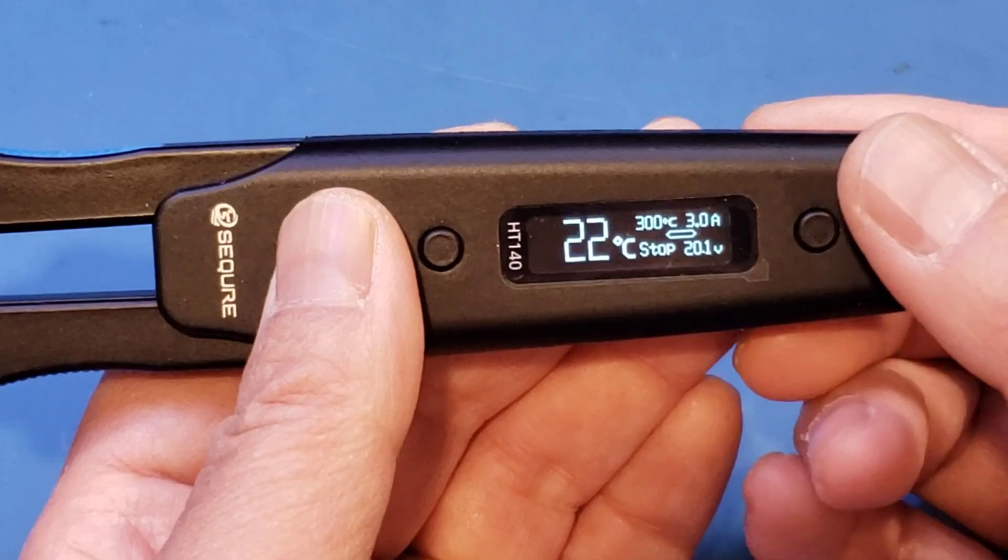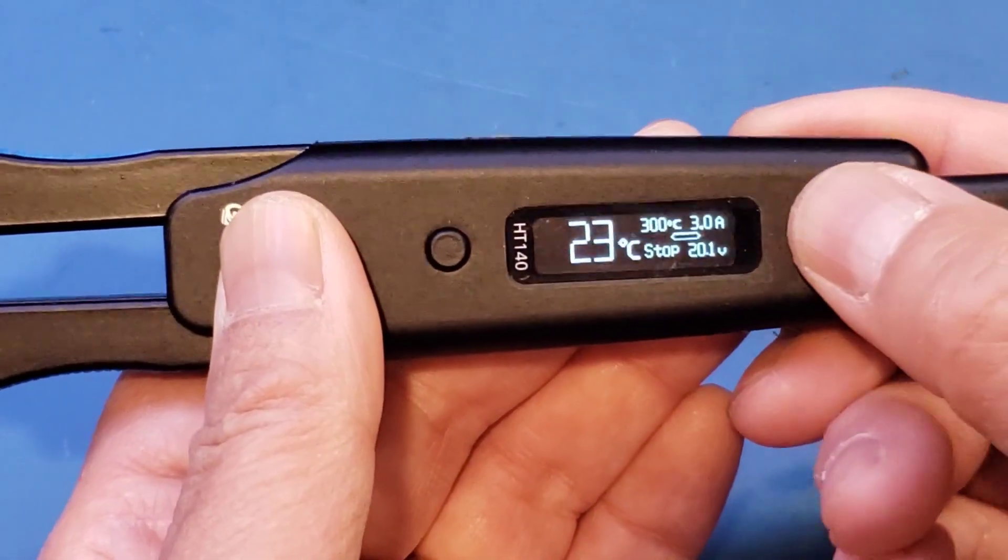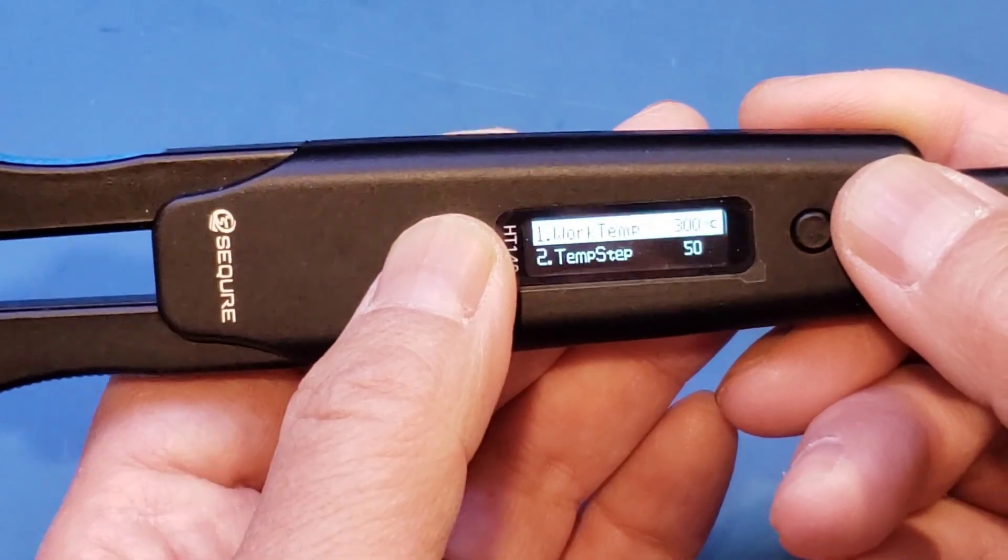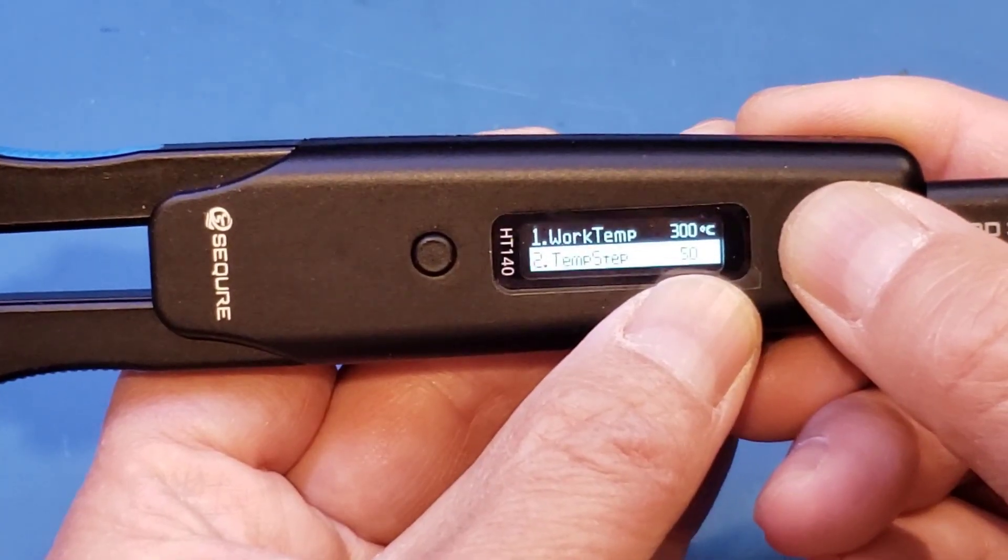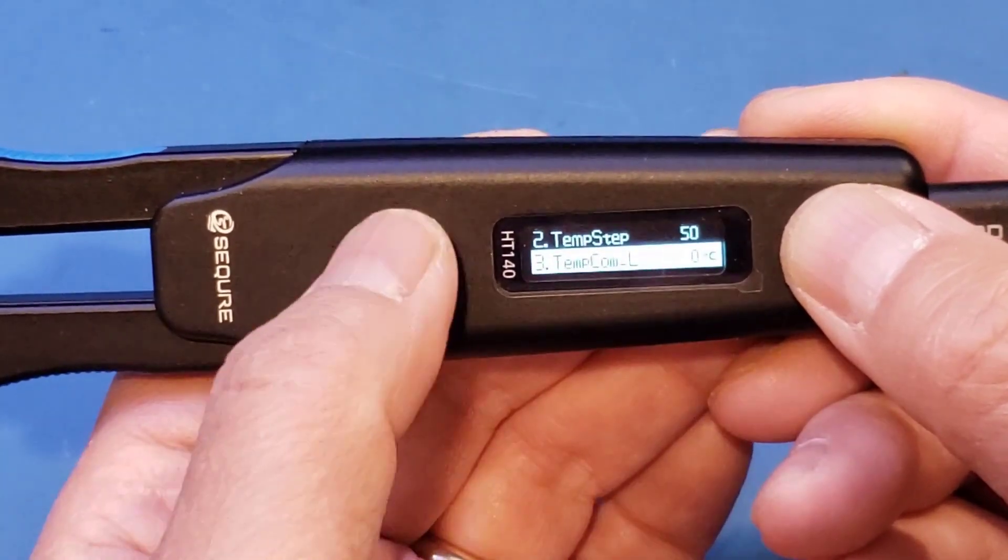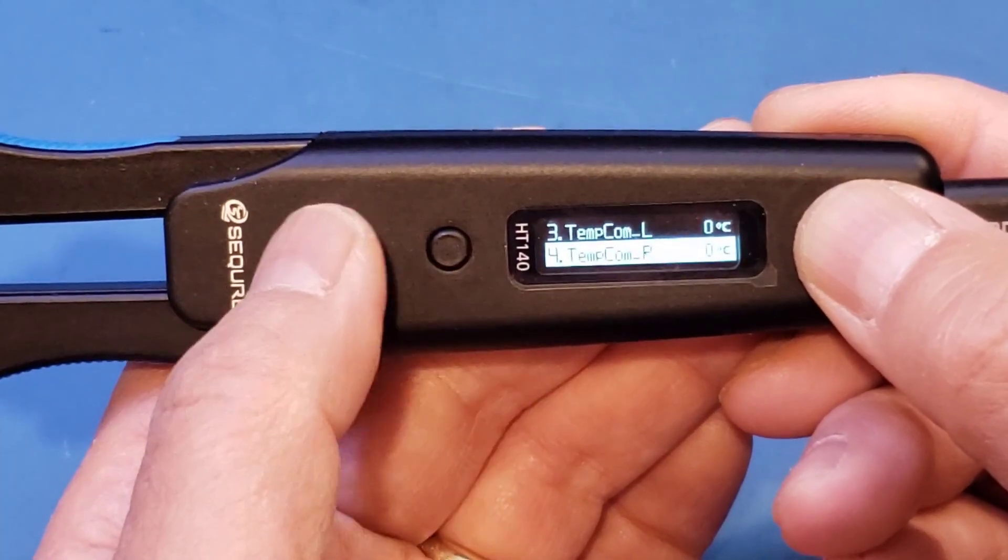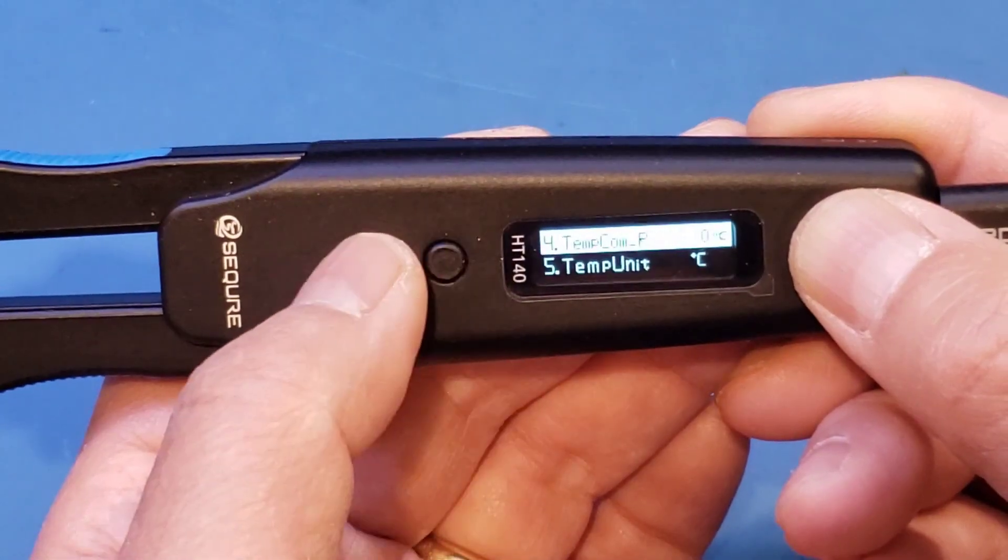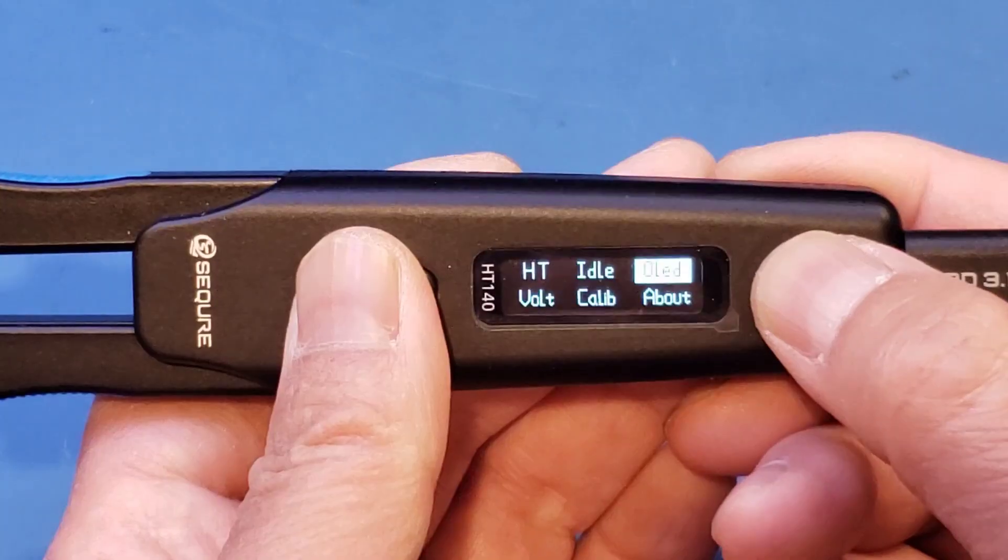Okay, so let's briefly take a look at the menu options here. To get to the menu, we just long press the right hand side button here. And we can get in. Let's see here. So here you can set the working temperature and you can adjust the temperature step. And by default, as we mentioned earlier, it's 50 degrees, but you can adjust to anything you like. And here we have the compensation and the temperature unit, pretty standard stuff. And then we have the OLED.